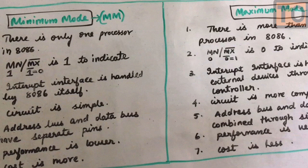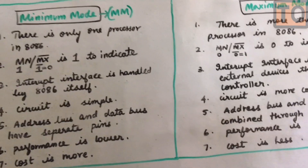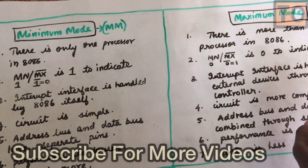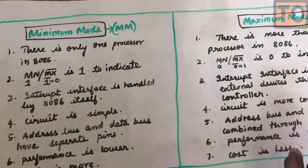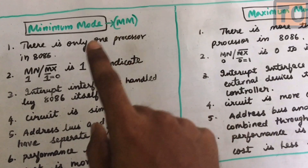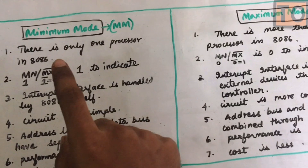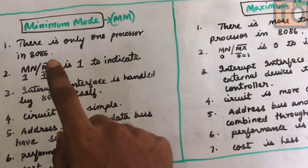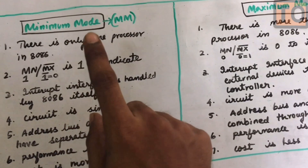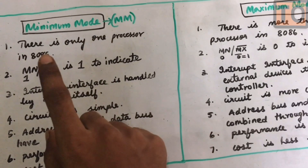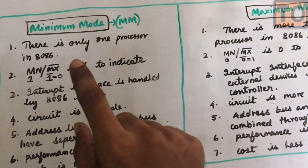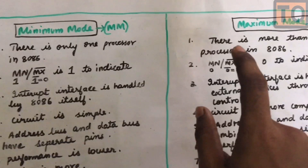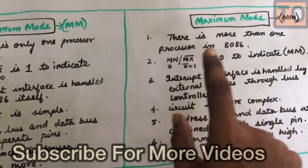The first difference is there is only one processor in the minimum mode. In the maximum mode, there is more than one processor.